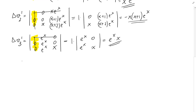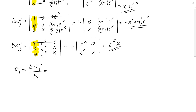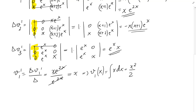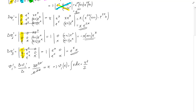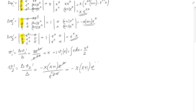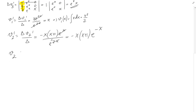Now we can find V1'. V1' equals delta_V1' over delta, which is x e^(2x) over e^(2x), so V1' equals x. Therefore V1(x) equals the integral of x dx, which is x²/2. We don't write the constants for variation of parameters to keep things simple. V2' equals delta_V2' over delta, which is negative x(x+1)e^x over e^(2x), giving negative x(x+1)e^(-x). So V2(x) is the integral of negative(x² + x)e^(-x) dx.